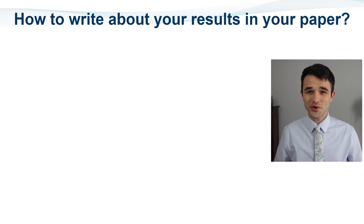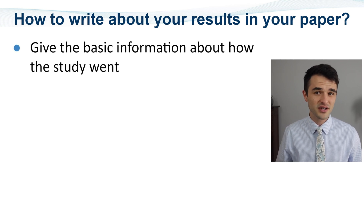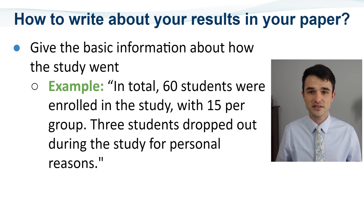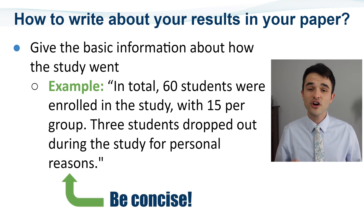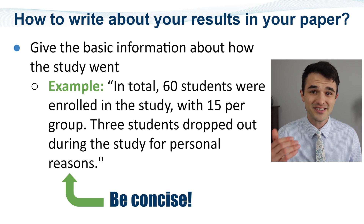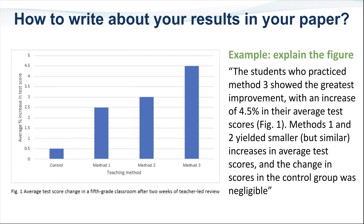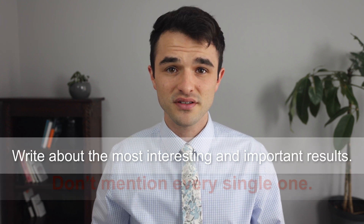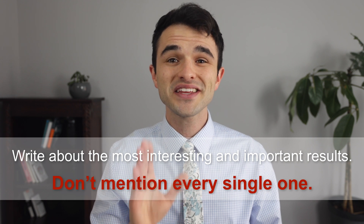How can you write about your results in your paper? The first step is to give the basic information about how the study went. For example: in total, 60 students were enrolled in the study with 15 per group. Three students dropped out during the study for personal reasons. Be concise — long sentences do not always help the reader understand complex ideas or data. For example, the students who practiced Method 3 showed the greatest improvement, with an average increase of 4.5% in their average test scores. Methods 1 and 2 yielded smaller but similar increases, and the change in scores in the control group was negligible. In the text, write about the most interesting and important results — don't mention every single one, as this quickly gets boring for readers.